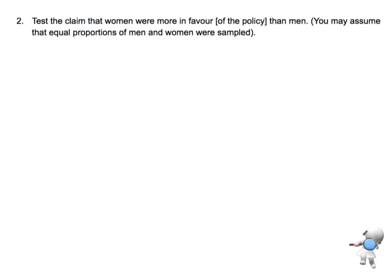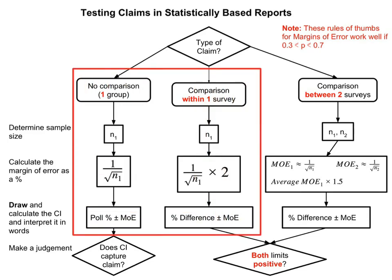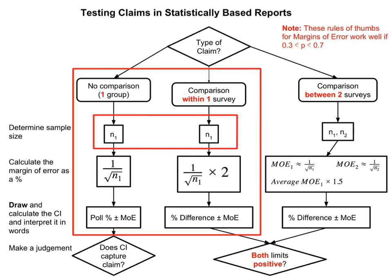We want to test the claim that women were more in favour than men, and we're asked to assume that there are equal proportions of men and women. Looking at our flowchart here, we know we're still dealing with either no comparison or a comparison within one survey, because we've only got a single sample size. So we know we're dealing with one of these two situations.